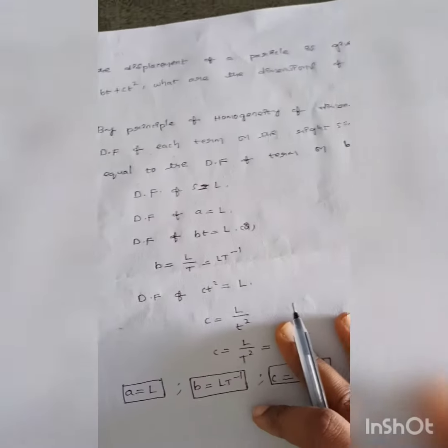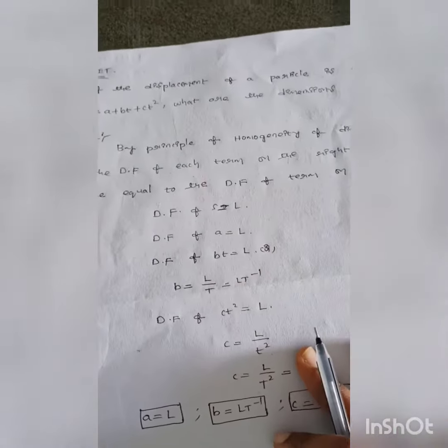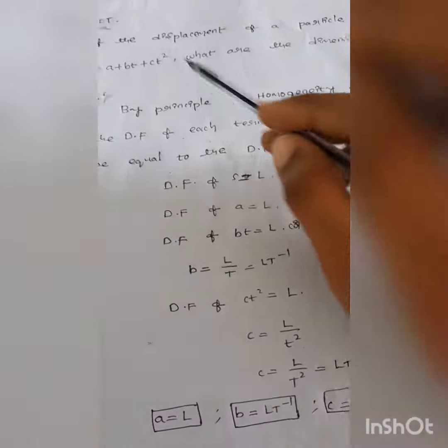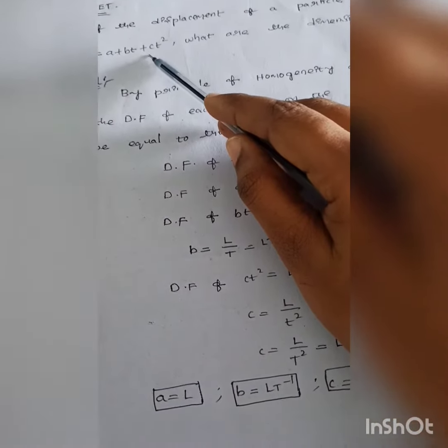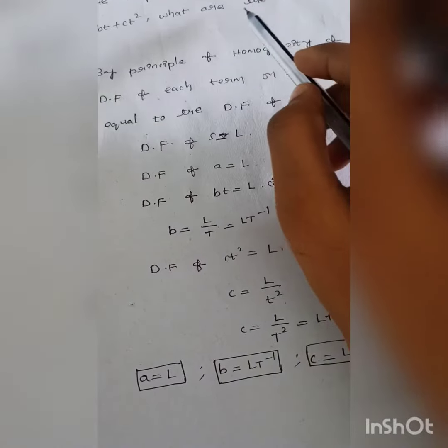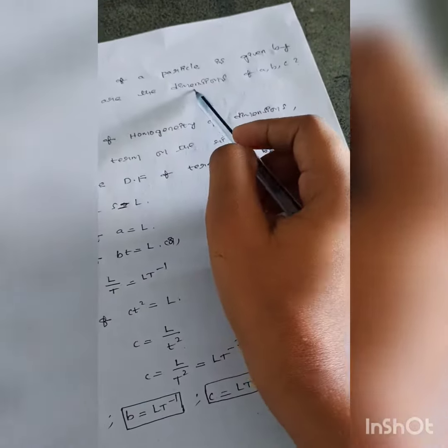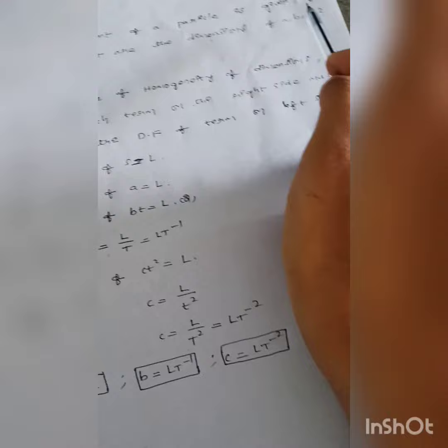If the displacement of a particle is given by s is equal to a plus bt plus ct squared, what are the dimensions of a, b, c?